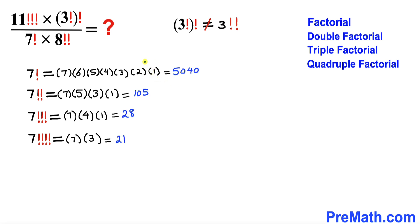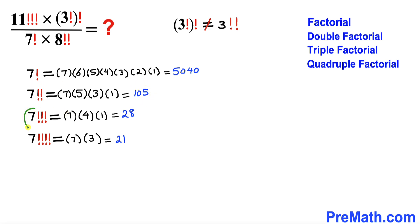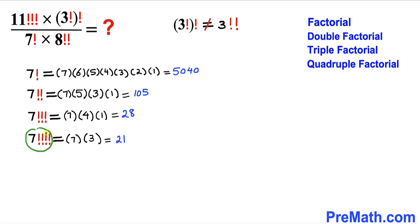Multiplying all these out: 7 factorial is 5040, 7 double factorial is 105, 7 triple factorial is 28 (since 7 times 4 times 1 equals 28), and 7 quadruple factorial is 21.